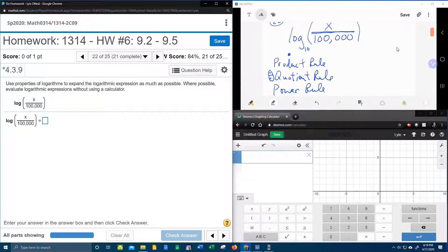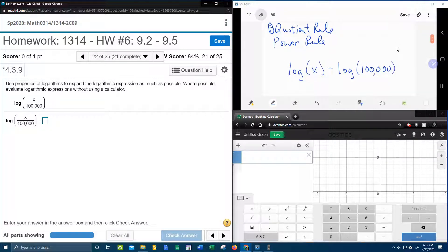So again, the quotient rule says if you're taking the log of a fraction, that'll turn into subtraction. It's log of the top minus log of the bottom. And that is pretty much done.